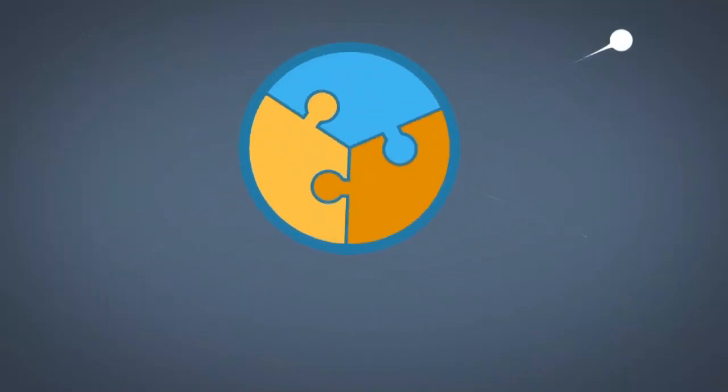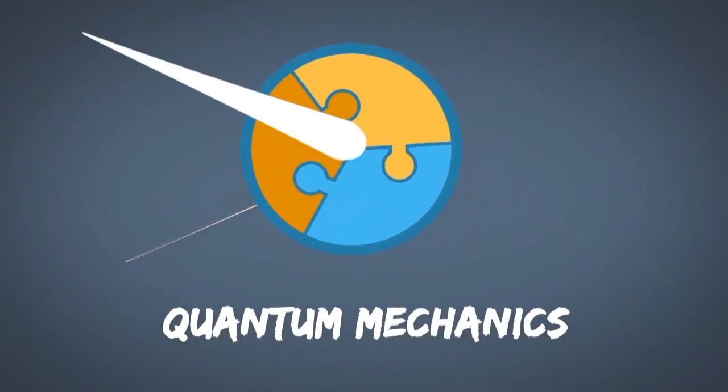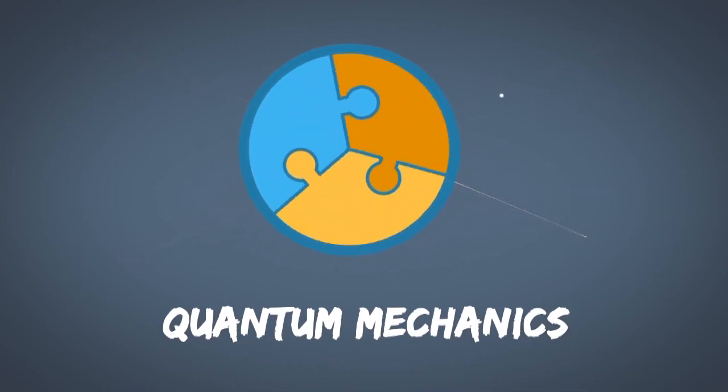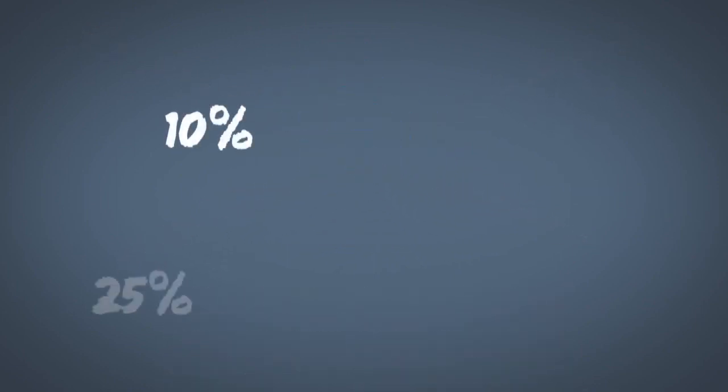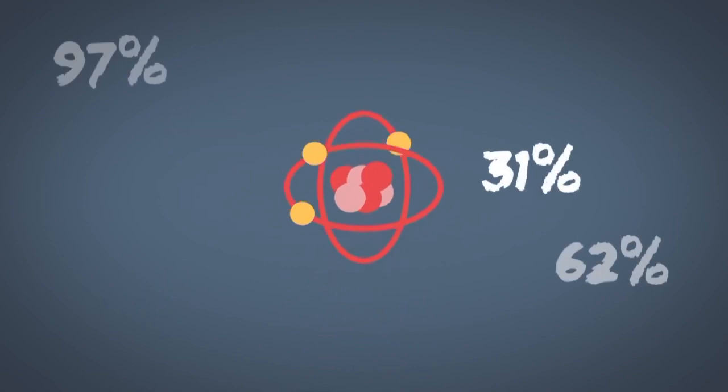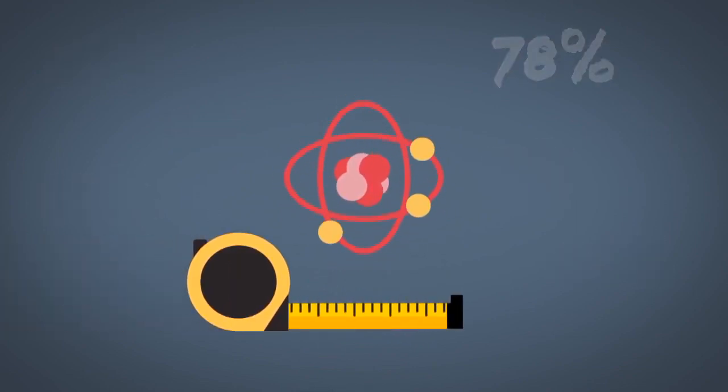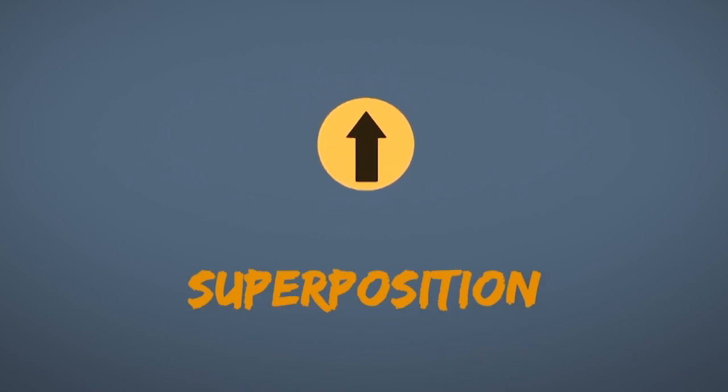The whole machinery of quantum mechanics is designed to translate the probabilities of what you might measure when you go to make an observation. In the case of an electron spin, the language that we use in quantum mechanics goes something like this: The spin of the electron is in a superposition of both spin up and spin down states.